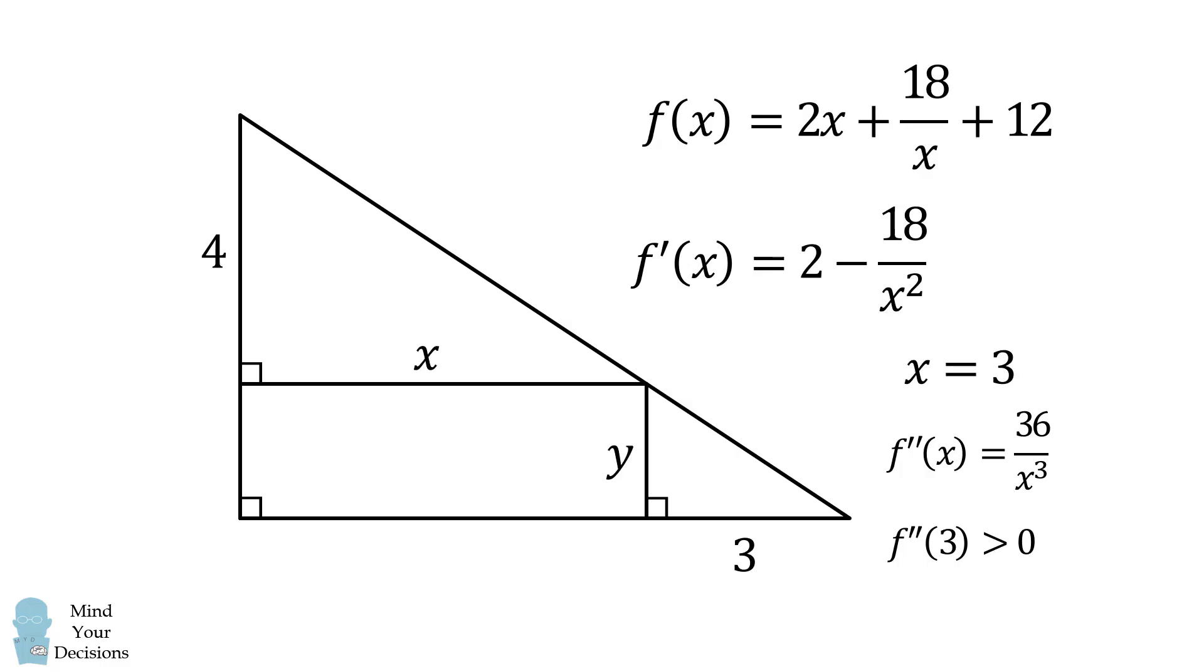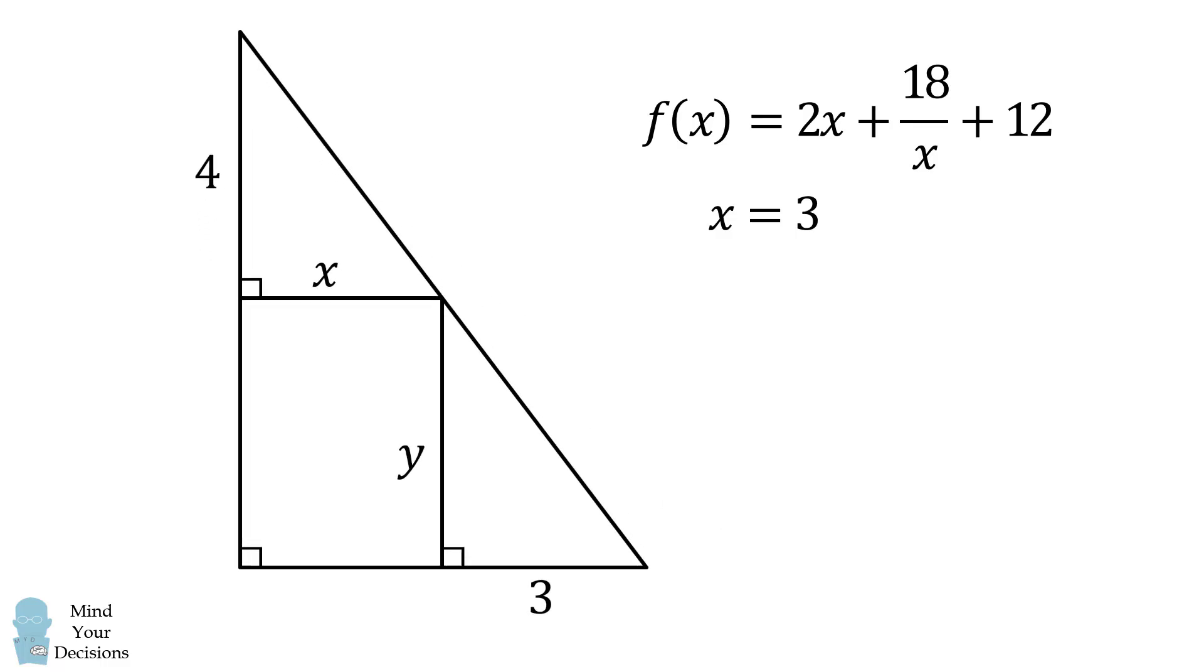Thus, the minimum area will happen when X is equal to 3. From here, we can substitute in. We can see that X is equal to 3 will correspond that Y is equal to 4. So, interestingly, the area is minimum when these two small right triangles are congruent. Then, what is the area of the large triangle? We'll substitute in for f of X, and then simplify. We'll get that f of 3 is equal to 24 units squared, and that's the answer. That's the minimum area for a triangle that satisfies these conditions.